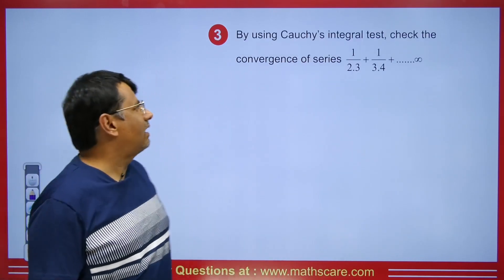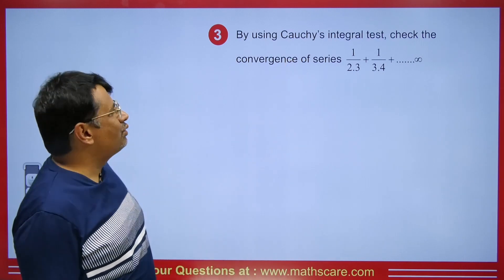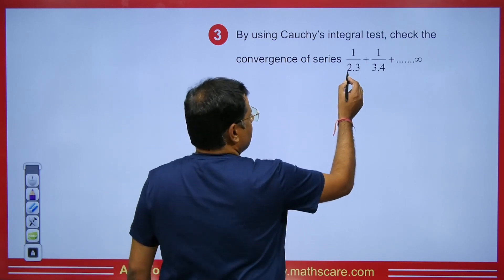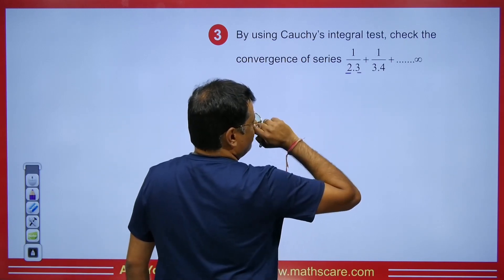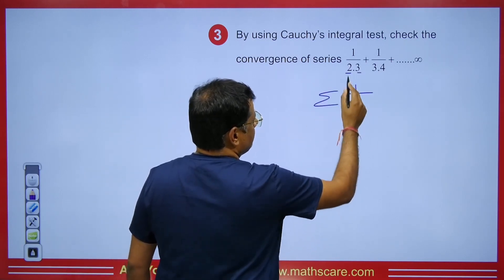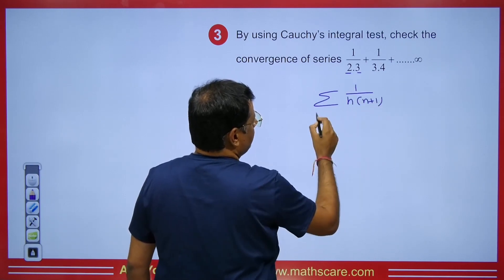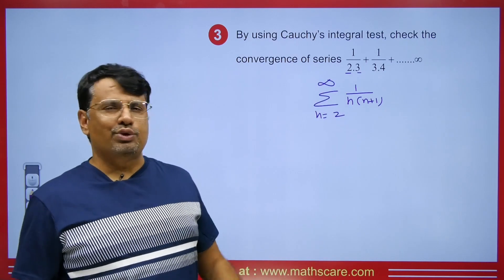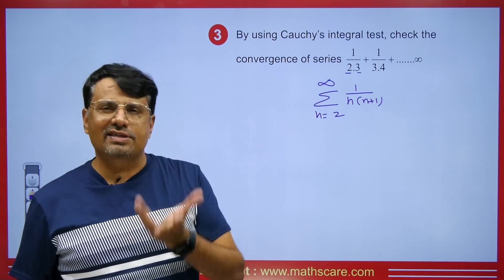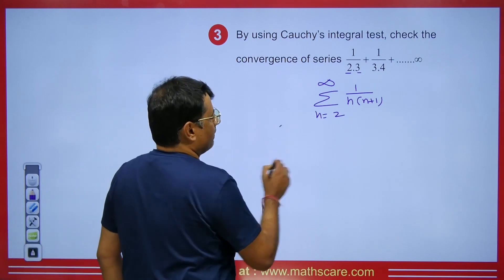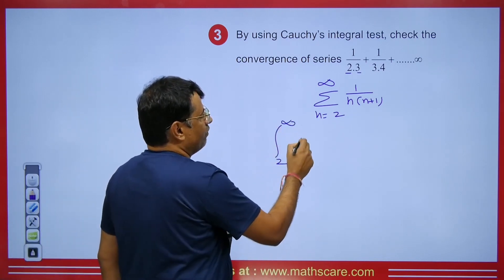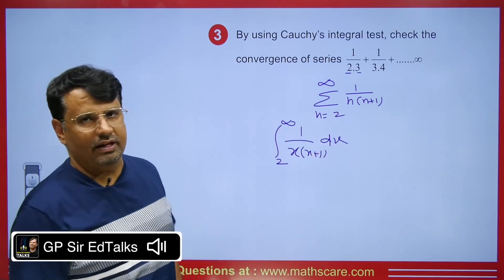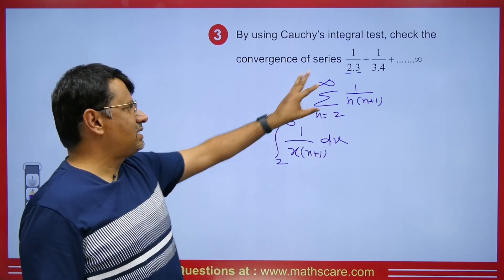In the next question, we have to test convergence of the series using the integral test. As you can see on the screen, we have the term 1/(n(n+1)), and I can write this as summation n=2 to infinity of 1/(n(n+1)). It's positive, monotonically decreasing, and integrable. So we will get the integral from 2 to infinity of 1/(x(x+1)) dx. By the comparison test we expect convergence, as I have already explained in previous videos.